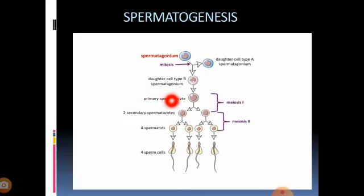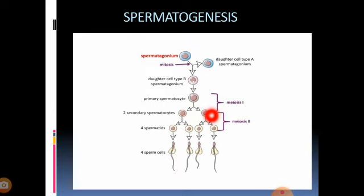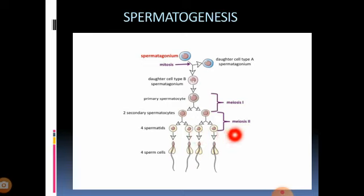Before that is nothing but the maturation phase. This primary spermatocyte enters into the maturation phase - the third phase I mentioned. Through meiosis I, the diploid primary spermatocyte produces two secondary spermatocytes. Then these two secondary spermatocytes again undergo meiosis II and produce four haploid spermatids. Up to this is nothing but the formation of spermatids.